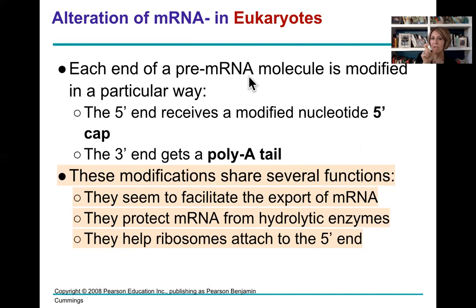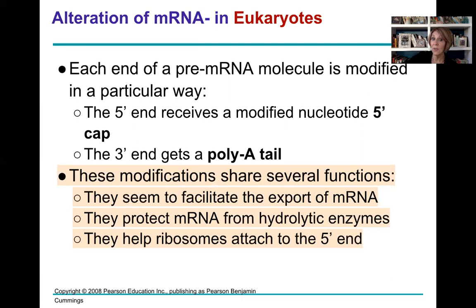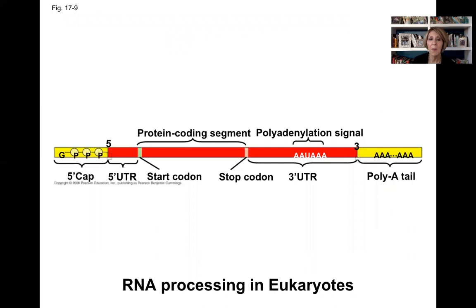In eukaryotes, the beginning of the pre-messenger RNA receives a 5' cap, which helps stabilize the molecule and helps it negotiate through the nuclear pore to the cytoplasm where the ribosome is. We also add a poly-A tail — a stretch of A's on the 3' end — which facilitates export, helps the mRNA attach to the ribosome, and may protect the messenger RNA against hydrolytic enzymes in the cytoplasm.